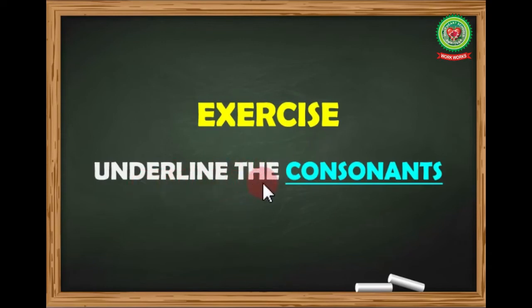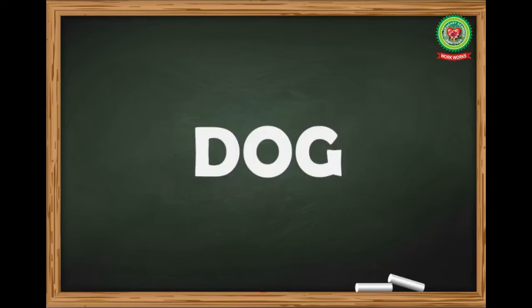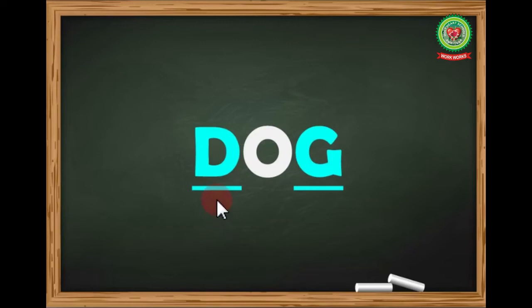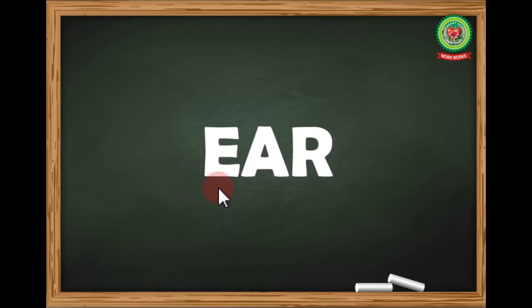In Exercise Two, you have to underline the consonants. Our first word is 'dog' — D, O, G. The consonants in 'dog' are D and G, while O is a vowel. Our next word is 'ear' — E, A, R. The consonant here is R, while E and A are vowels.